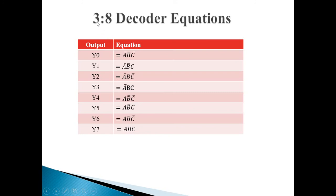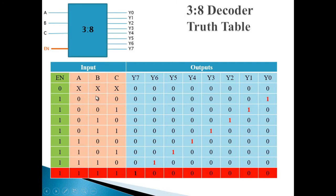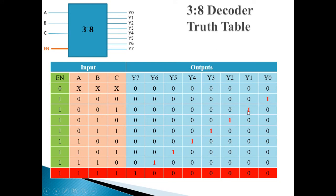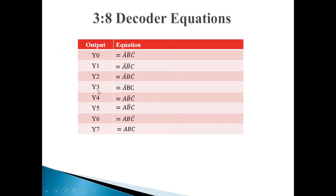Here are the equations of the 3-to-8 decoder, similar to how we generated equations for the 2-to-4 decoder. For Y0, which is 1 when A, B, C all are 0, 0, 0, the corresponding equation will be A bar · B bar · C bar. These are SOP equations — in SOP we gather the term which represents 1 in the output. For Y1, it is 1 when A is 0, B is 0, and C is 1, represented by A bar · B bar · C. Y2 is 1 when A is 0, B is 1, and C is 0, represented by A bar · B · C bar. Like this, equations are identified for all outputs Y0 to Y7.